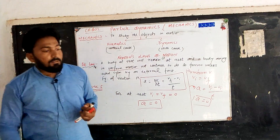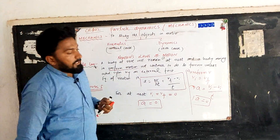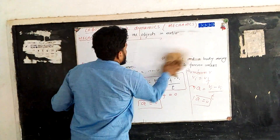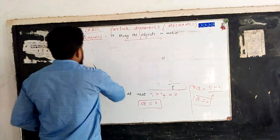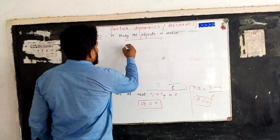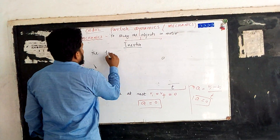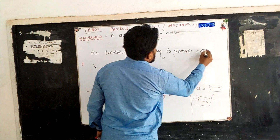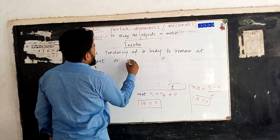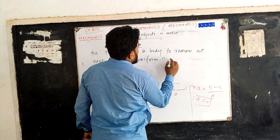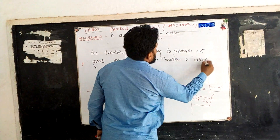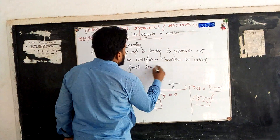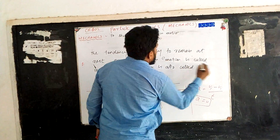Now let us first discuss why the first law is called the law of inertia, and what inertia is. Inertia is defined as the tendency of a body to remain at rest or in uniform motion. This property is called inertia.